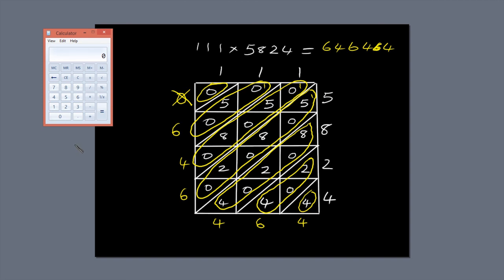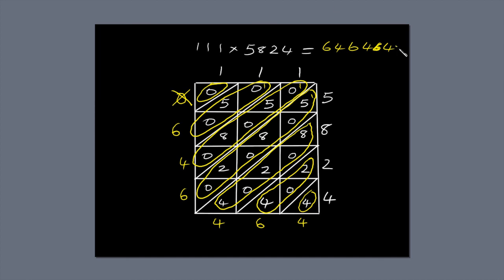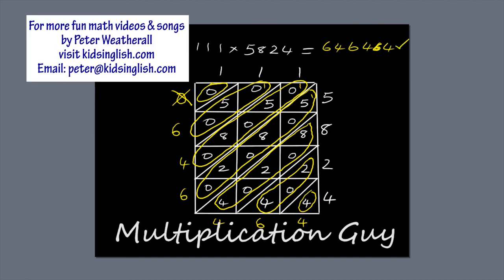I'm going to check the answer on my calculator, but I'm allowed to do that because I'm not on board the space station. 111 times 5,824 equals 646,464. So the answer's correct. That's why they call me the Multiplication Guy.